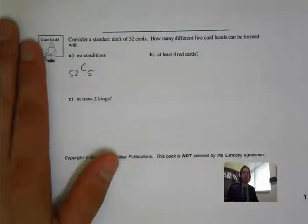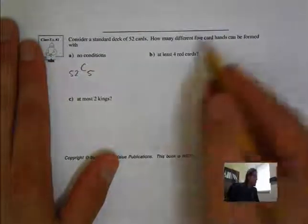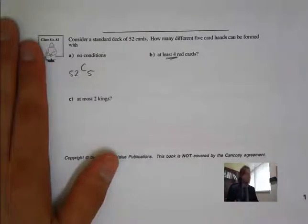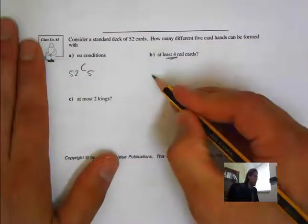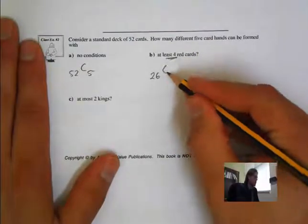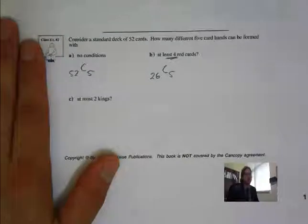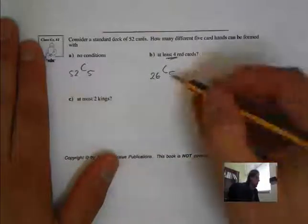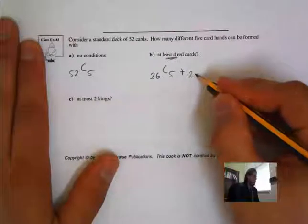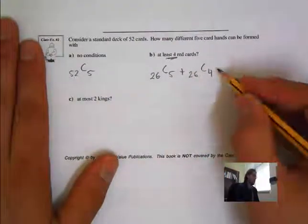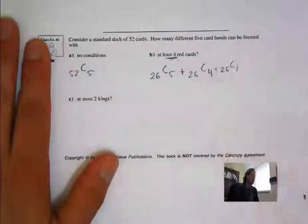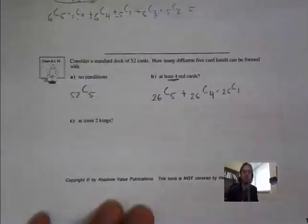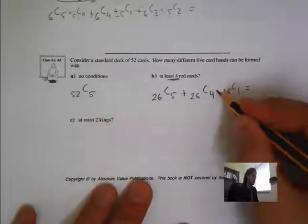The next one says: at least 4 red cards, so a minimum of 4 red cards. We can have 5 red cards or 4 red cards. There are only 26 red cards, so out of those 26, we want 5, and that means 0 black cards — I could write 26C0, but that's just 1. Or out of 26, choose 4, meaning we'll also have 1 black card, so out of 26 black cards, we have 1. We add those two cases together and get our answer.